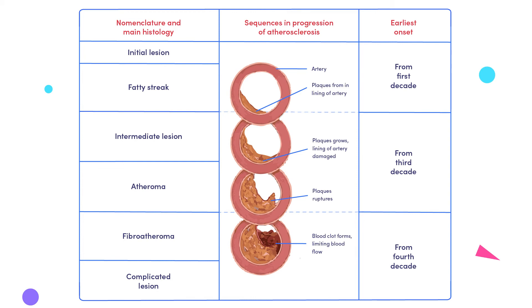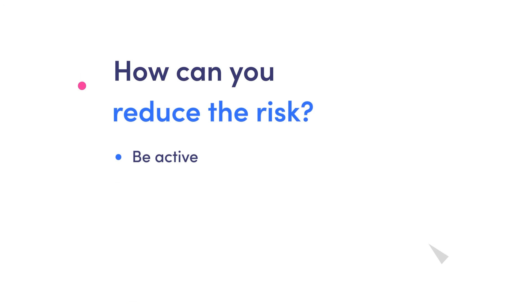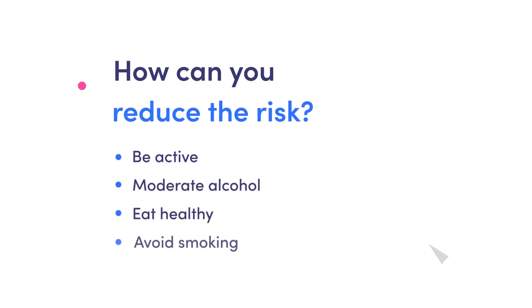The underlying disease process — atherosclerosis — starts in childhood, so it is never too late to be active, moderate alcohol, eat healthy, and avoid smoking. It also means that once a person gets a heart attack, they could easily get another one.